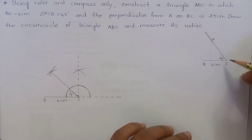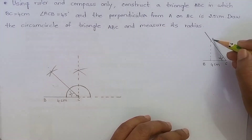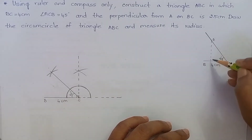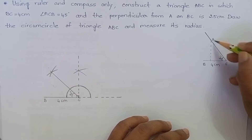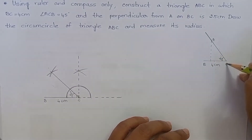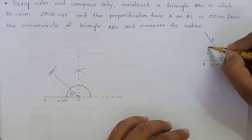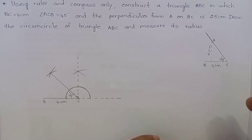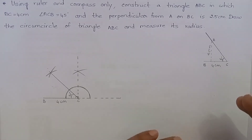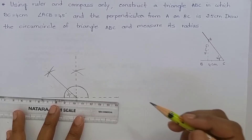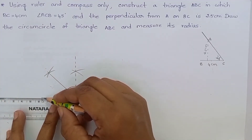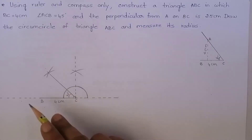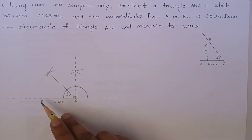It means we have to mark a point A on this line such that if we draw a perpendicular line from A on BC, then it should measure 2.5 cm. That is the meaning of the question. To mark the point A, we have to follow the following steps. First step is, we have to produce a line on this side. We have produced this line to draw a perpendicular on B.